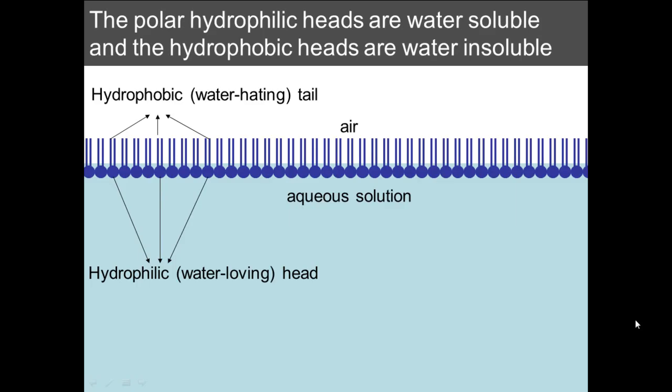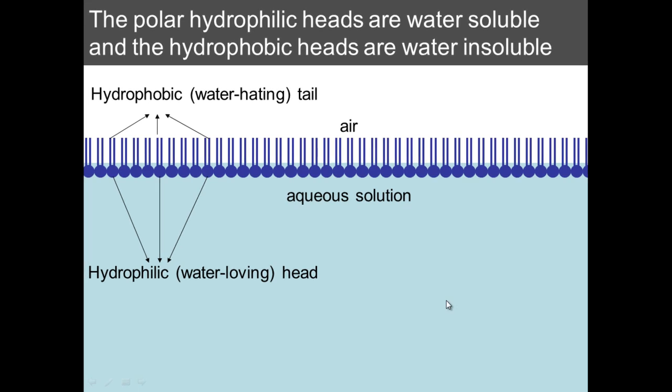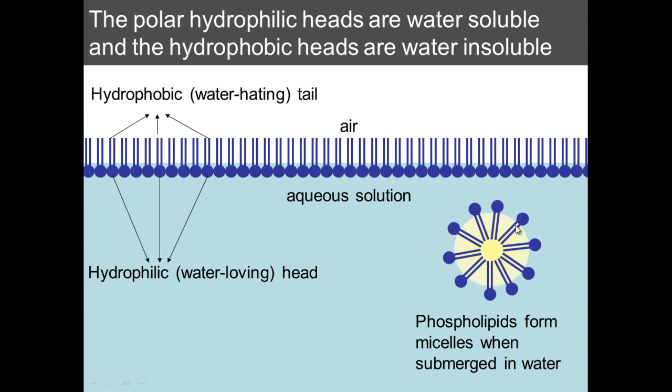When phospholipids are placed into an aqueous solution like they are here, you have a polar hydrophilic head. Polar means there is a charge involved on that section and hydrophilic means to like water. Then you have the tails which are hydrophobic. What ends up happening is the hydrophilic section, the bits that like the water, gather around the outside and then the hydrophobic tails that do not like the water gather on the inside and they form this structure called a micelle.